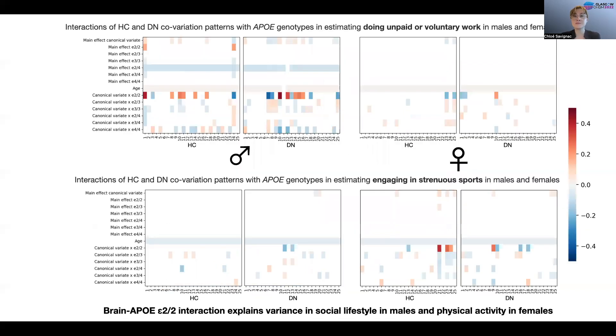but this time, instead of regressing family history of Alzheimer's disease, we looked at a different set of modifiable risk factors for Alzheimer's. So we observed similar patterns of interaction that were preferential to E2 homozygotes with several of the canonical variates.